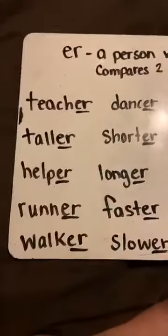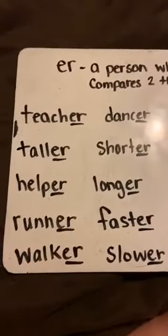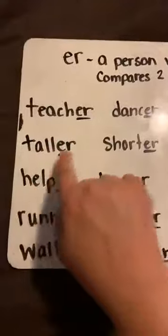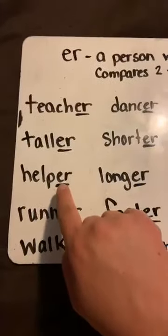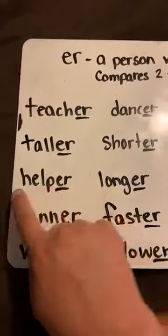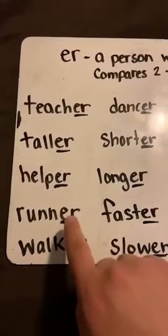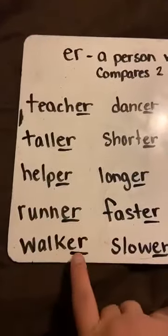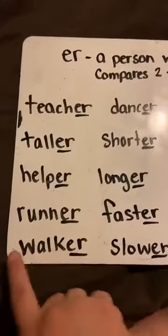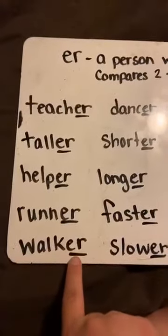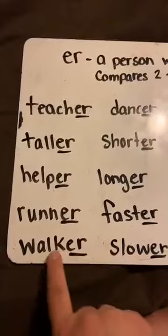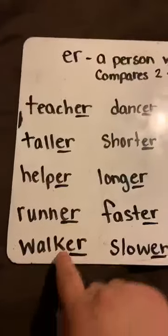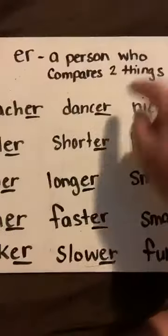Now I want you to say the sound and then say the word. We'll go down the columns today. Here we go: taller, helper, runner. Remember, '-er' means a person who does something — so in this case, '-er' would be a person who walks. Very good. Let's go to the next one.